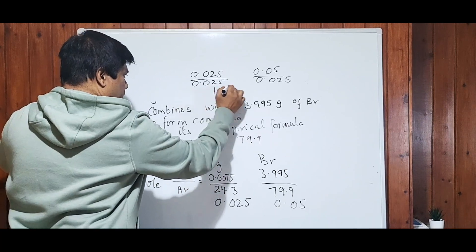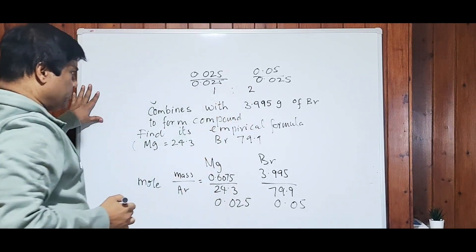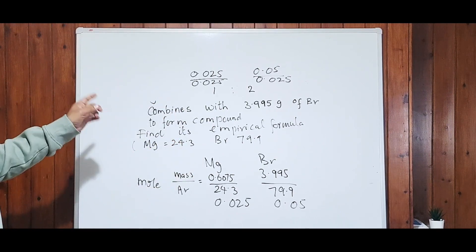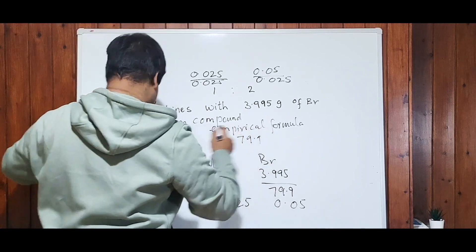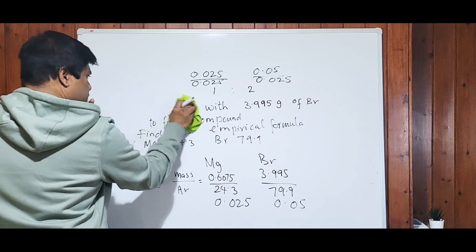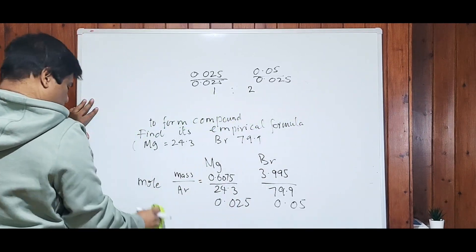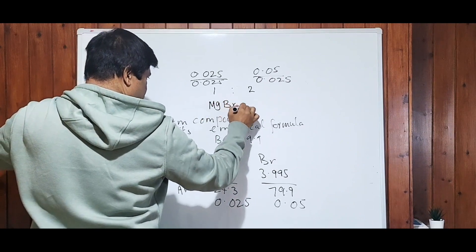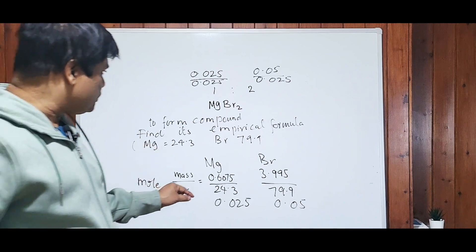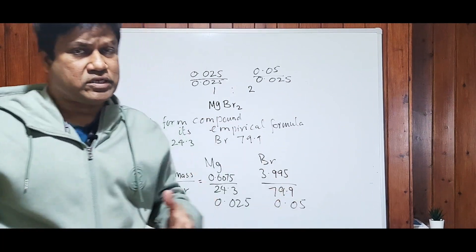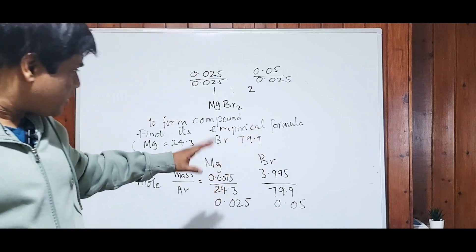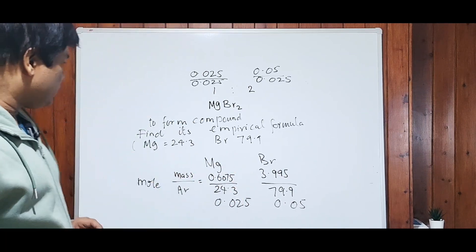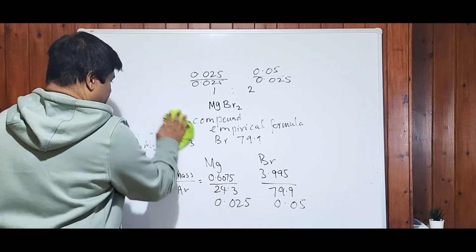This gives a ratio of 1:2, which means the empirical formula of magnesium bromide is MgBr₂ — magnesium 1 and bromine 2. I will show you how to write chemical formulas for each compound in future videos. For now, we are focusing on how to work out the empirical formula and molecular formula. Let's do one more question.